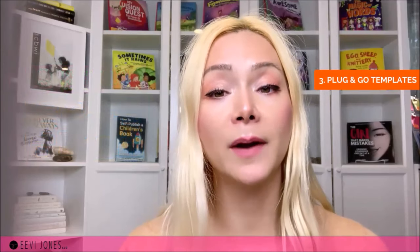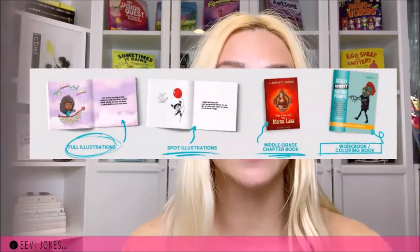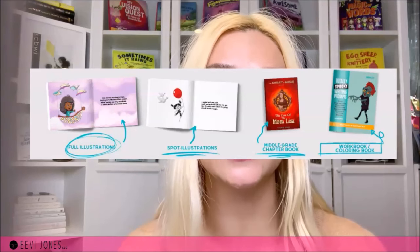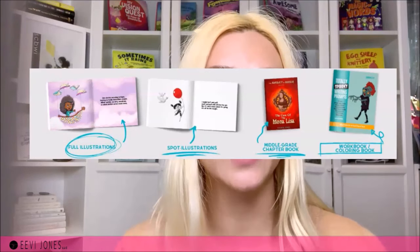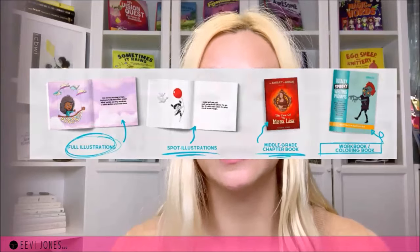My third formatting resource is my plug-in-go templates. The layout and look of our book's interior is important, and with these formatting templates there's no longer a need to hire a formatter. These plug-in-go layout templates include the four most requested children's book sizes and include every page needed — whether that's the title page, credit page, or the about-the-author page — and we can easily add more pages or delete those we don't need. These templates are not free, but I included them because formatting is a step where many authors ask for help.